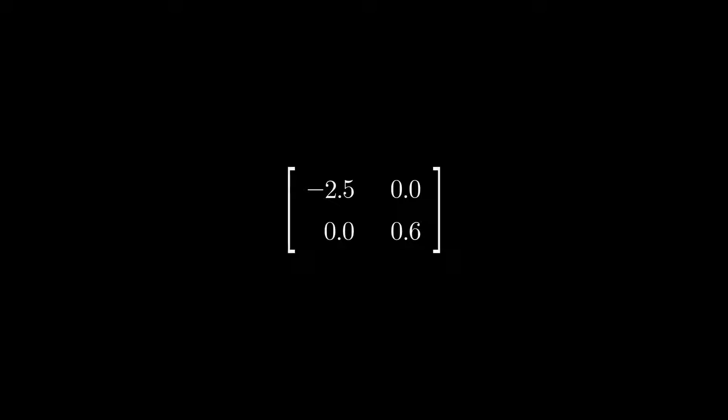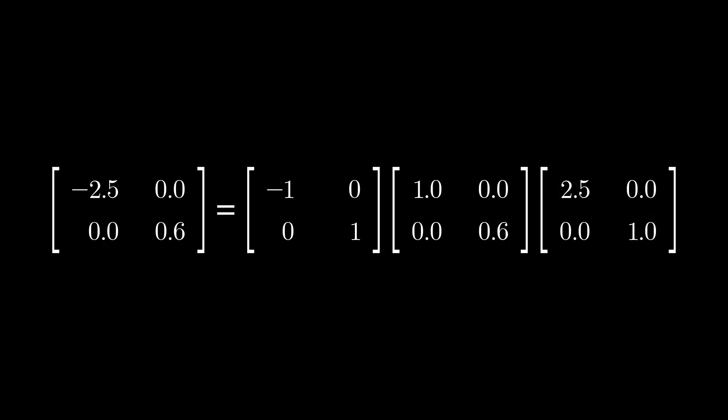How about this diagonal matrix here? You can pause the video and show it's just a composition of the three matrices on the right, which we know a lot about already. And therefore, we can conclude that the diagonal matrix must be the overall transformation of sequentially applying the three matrices on the right.